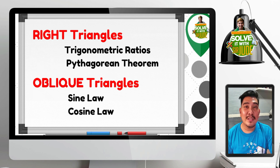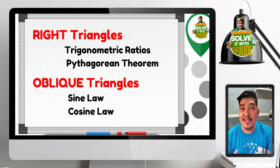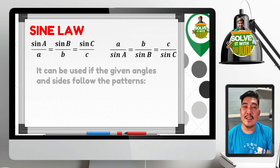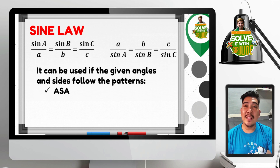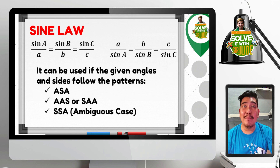Sine Law and Cosine Law can also be applied in right triangles, but in this video lesson the examples will focus on Oblique Triangles. Sine Law can be used if the given information follows the patterns ASA, AAS, or SAA, and of course the ambiguous case, SSA pattern.